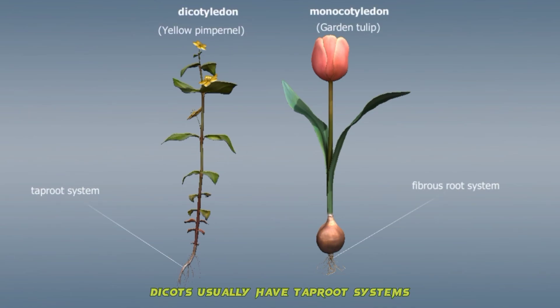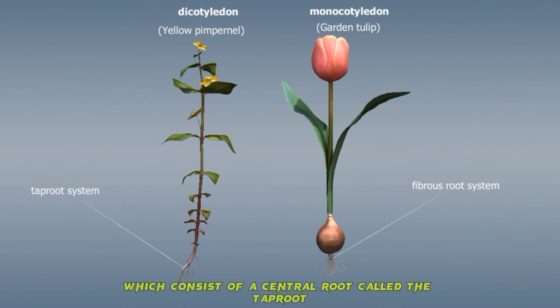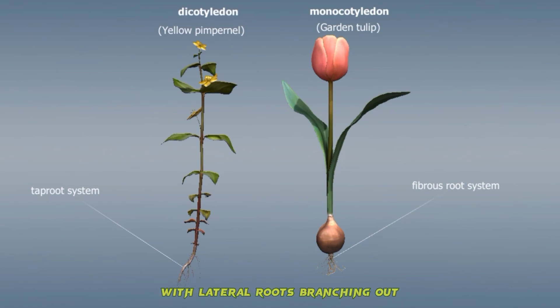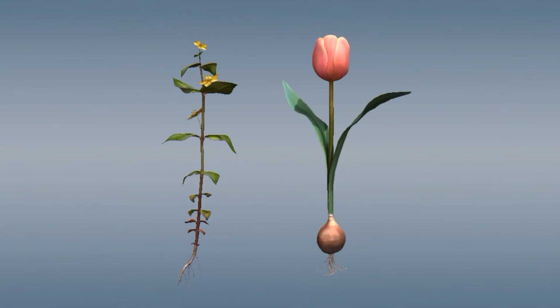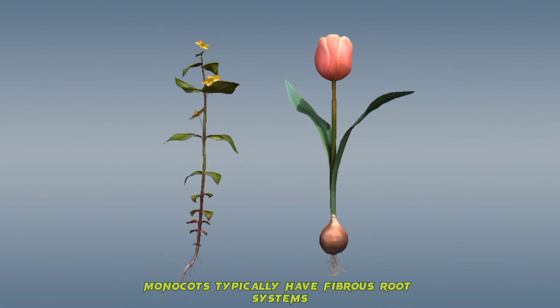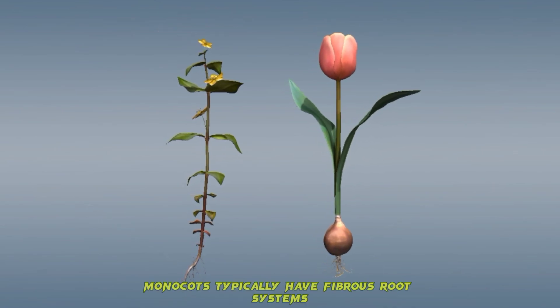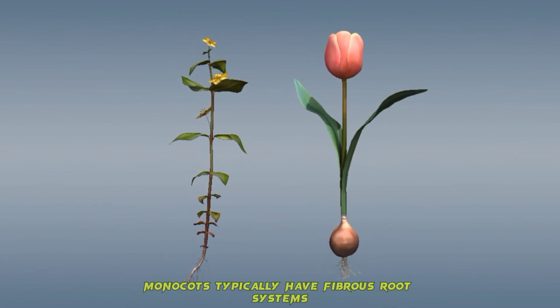Dicots usually have taproot systems, which consist of a central root called the taproot, with lateral roots branching out. Monocots typically have fibrous root systems.